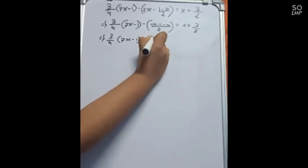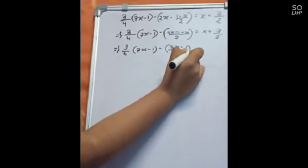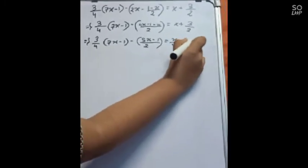It will become (5x-1)/2 equals to x/1 plus 3/2.